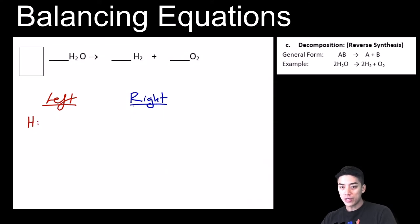I think the best way to learn balancing equations is just to do it. So we're first going to count up what's on the left-hand side of the arrow and on the right-hand side. So count up your hydrogens and oxygens. On the right side, we have two hydrogens and two oxygens.